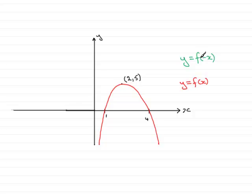Now what would this do to any graph of f of x? Whenever you've got a negative x in the bracket, it represents a reflection of the curve y equals f of x in the y-axis.